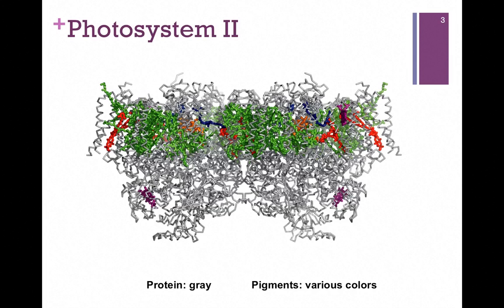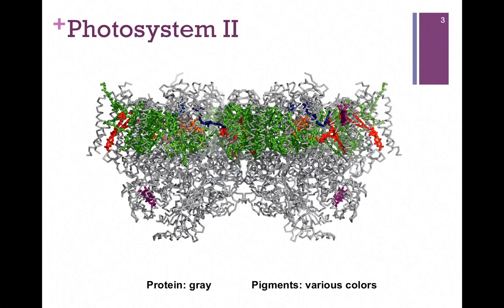Here's a model of Photosystem II. The protein is in gray, and the light pigments, or photoreceptors, are the various colors. As you can see, there's a protein architecture, but there are a lot of different types of pigment molecules so that they can capture light of different energy and pass it on to the next component.